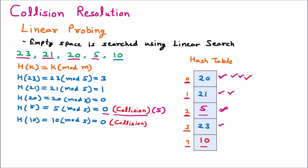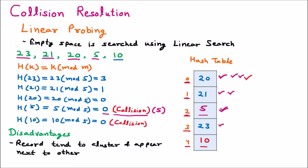Linear probing has disadvantages. First, records tend to cluster — they appear in sequence one after another. Second, this increases the average search time because of clustering caused by the linear search filling consecutive slots. There are two further types of linear probing that minimize clustering: quadratic probing and double hashing.